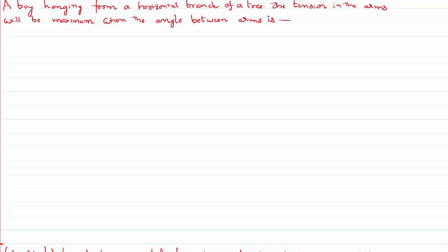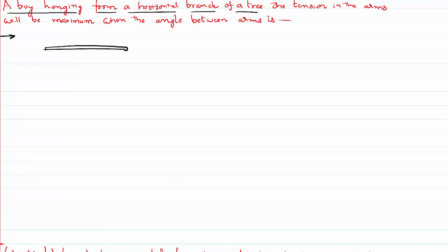Hello everyone, welcome to this video lesson. Today we are going to solve a problem based on vectors. It is given that a boy is hanging from a horizontal branch of a tree — the branch is horizontal and the boy is hanging from it with his hands like this.